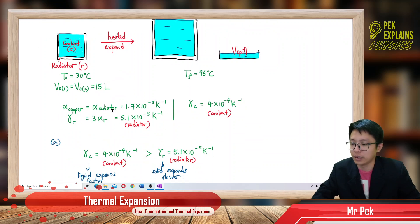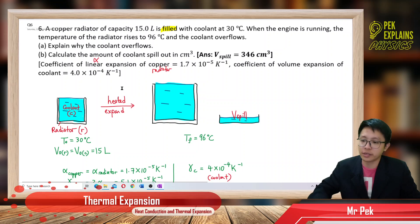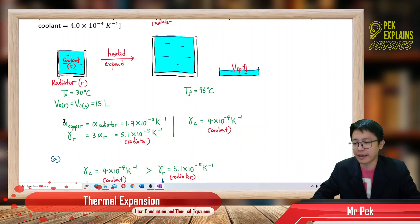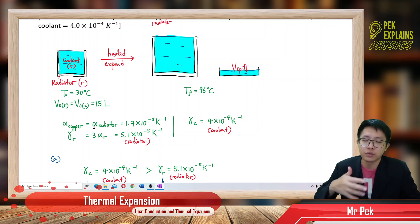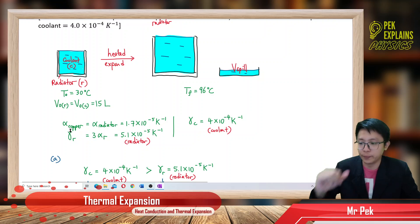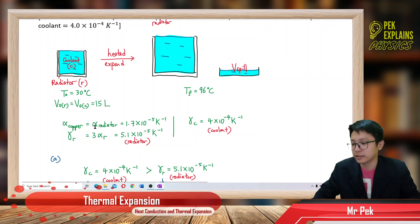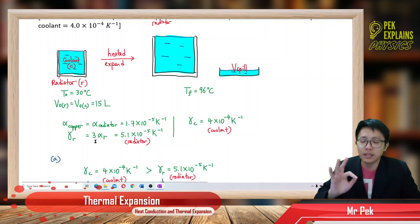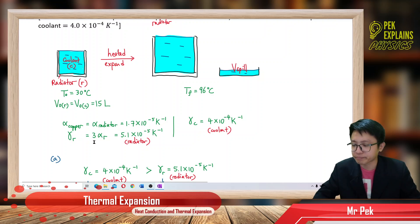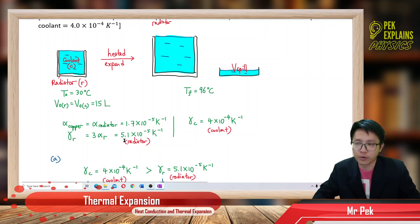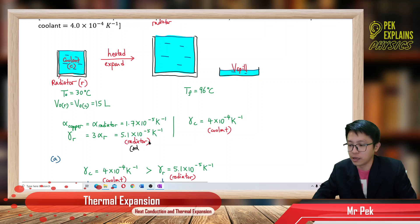The alpha for copper is 1.7 × 10⁻⁵. But this whole question is talking about volume, so this alpha needs to be changed to gamma, because alpha is only for length — you need gamma for volume. So alpha for the radiator is 1.7 × 10⁻⁵, and the gamma for the radiator is 3 times alpha. So 1.7 × 10⁻⁵ multiplied by 3 gives 5.1 × 10⁻⁵. This is the coefficient of volume expansion of the radiator, the solid container.